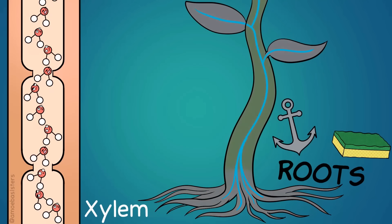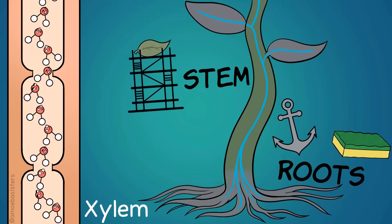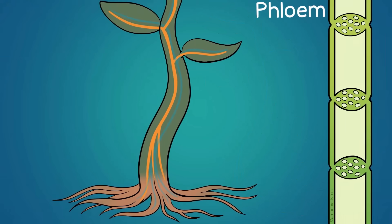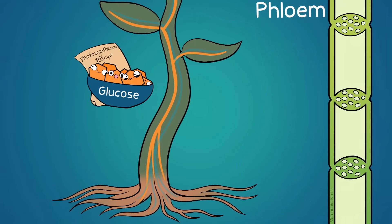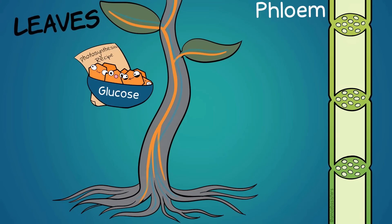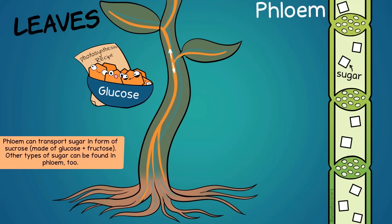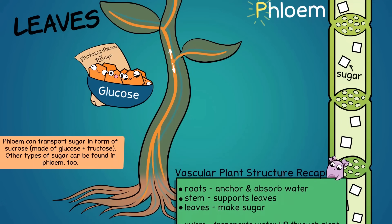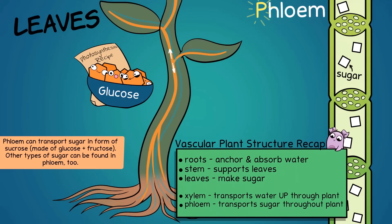The xylem continues up from the roots, through the stem, to the leaves. Structure-wise, the stem has a function of providing support to the leaves. Now, the other vascular tissue is the phloem. Recall that glucose — a sugar — is typically produced in the leaves during photosynthesis, and all the plant cells will need sugar. Sugar is the plant's food source. The phloem carries sugar from the leaves where it's generally made throughout the plant. The word phloem might start with a P, but it has the same F sound that food has, so it helps to remember that it carries the plant's food.